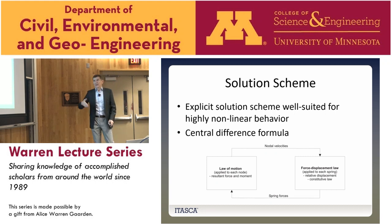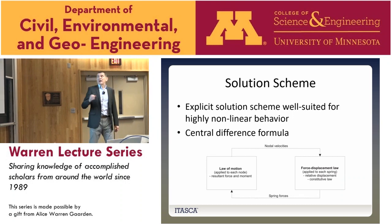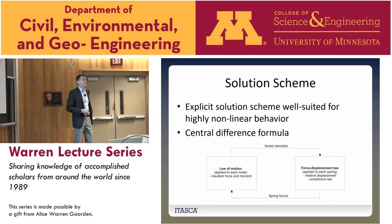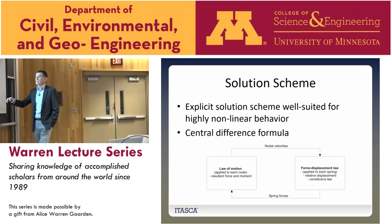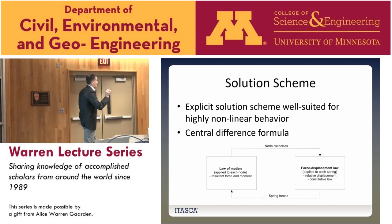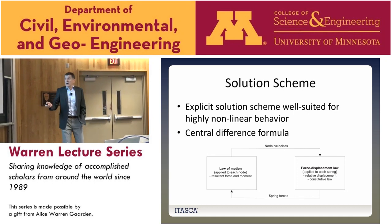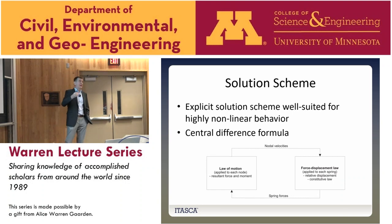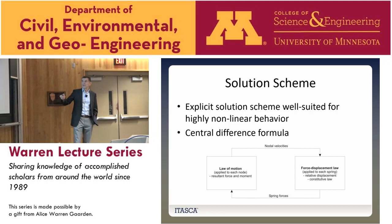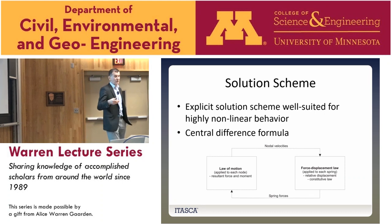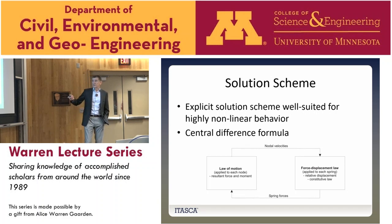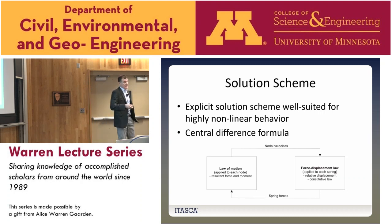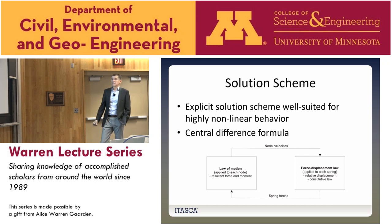The calculation in the mechanical model uses an explicit solution scheme. All Itasca codes use this scheme, and the main reason is that it is well suited for solving highly non-linear problems. We use a central difference formula to solve the equation of motion for every node — three translational and three rotational. The equation of motion is solved based on distribution of masses and resultant forces and moments. From that we obtain velocities and displacement increments, which are used in constitutive laws to get force increments. This cycle repeats until we reach the target time or the model reaches equilibrium.